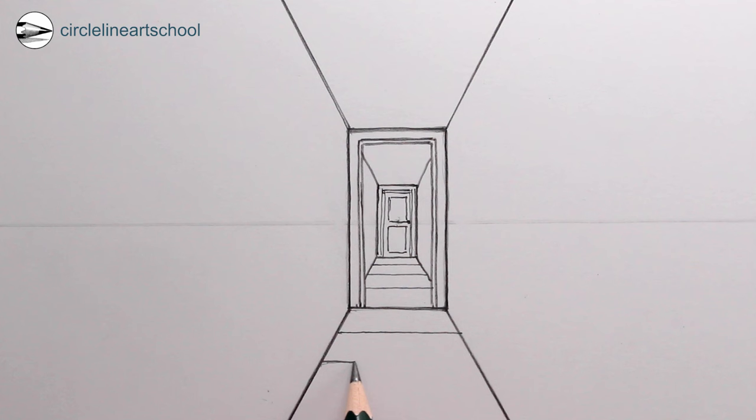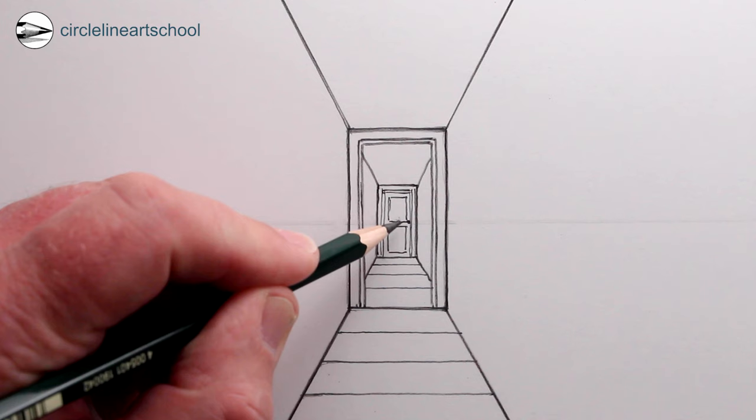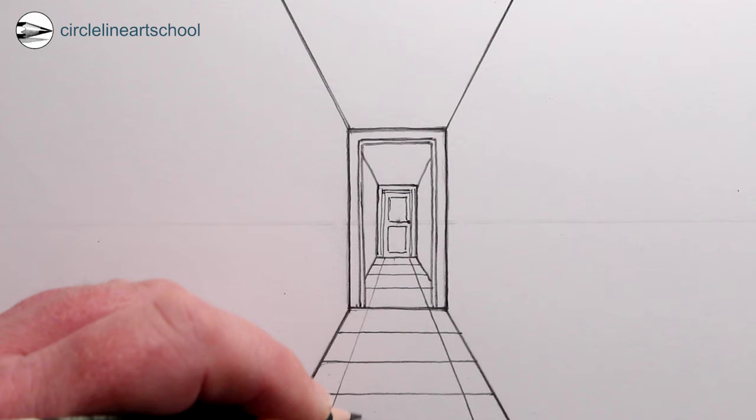And then once we've got these horizontal lines on the floor, we could draw some receding lines using the single vanishing point for this drawing in one-point perspective, to find out where these receding lines will recede to. Now all of these receding lines are parallel to each other, that means that they're all going to use the same vanishing point, the single vanishing point in the center of the drawing.